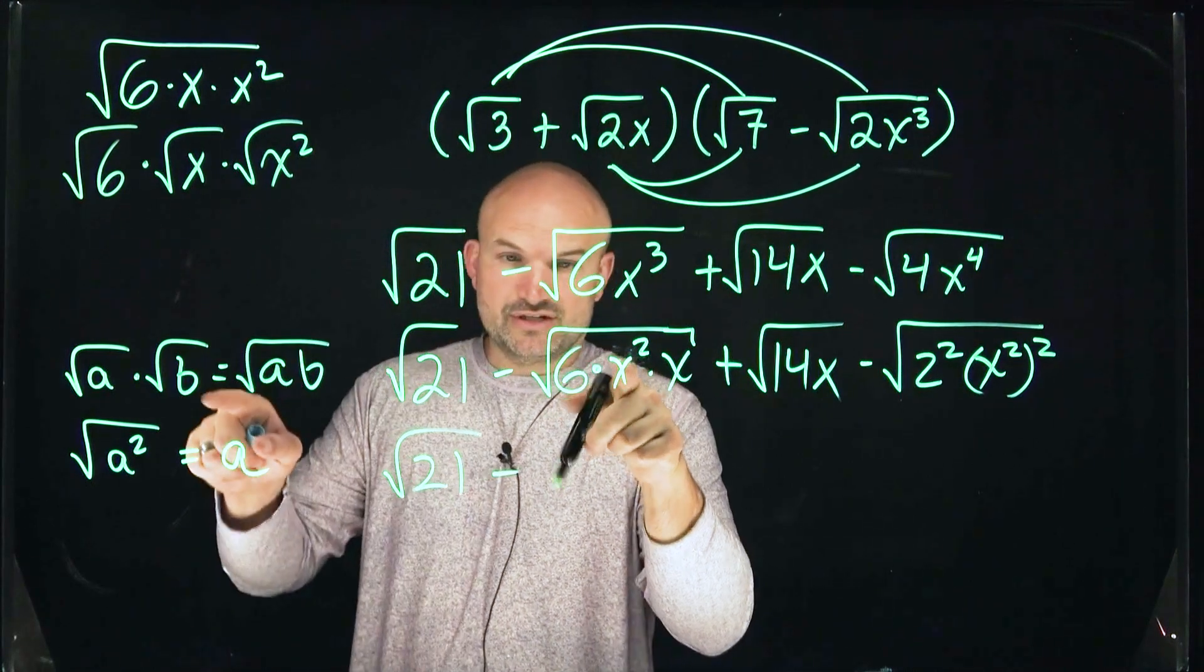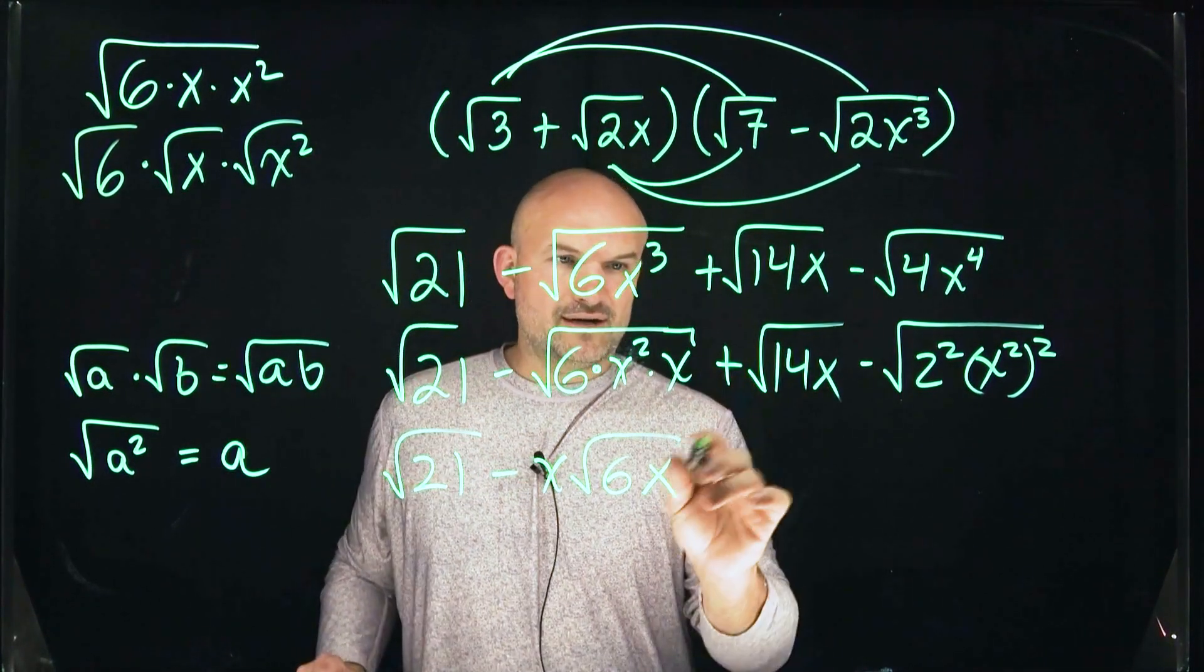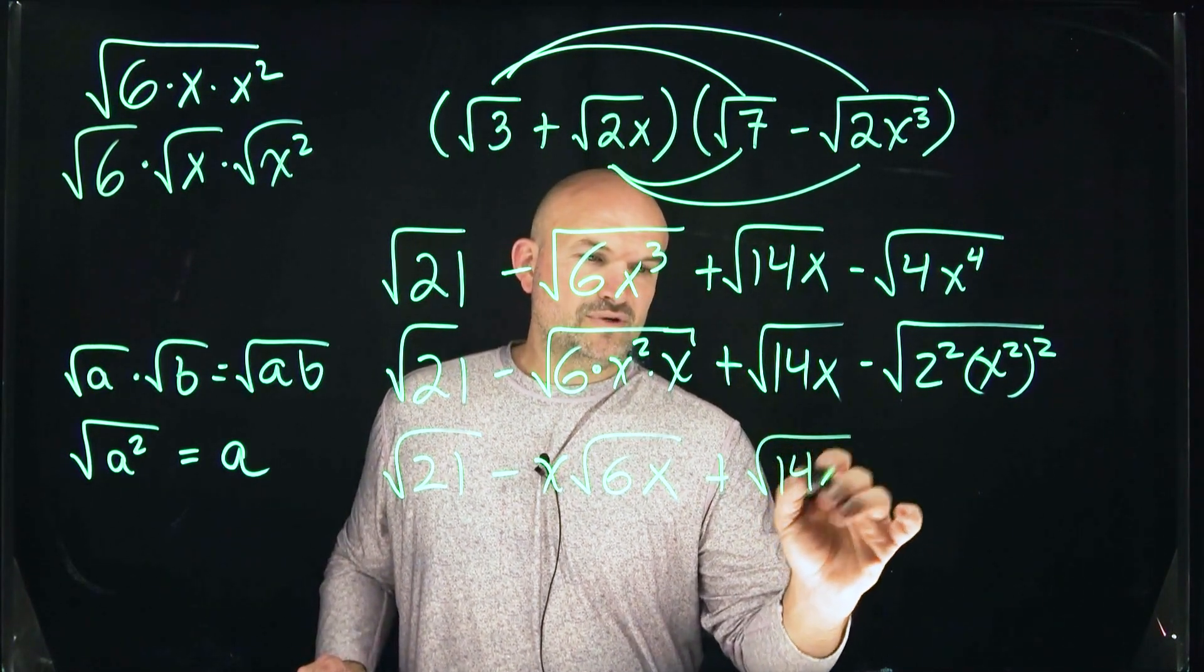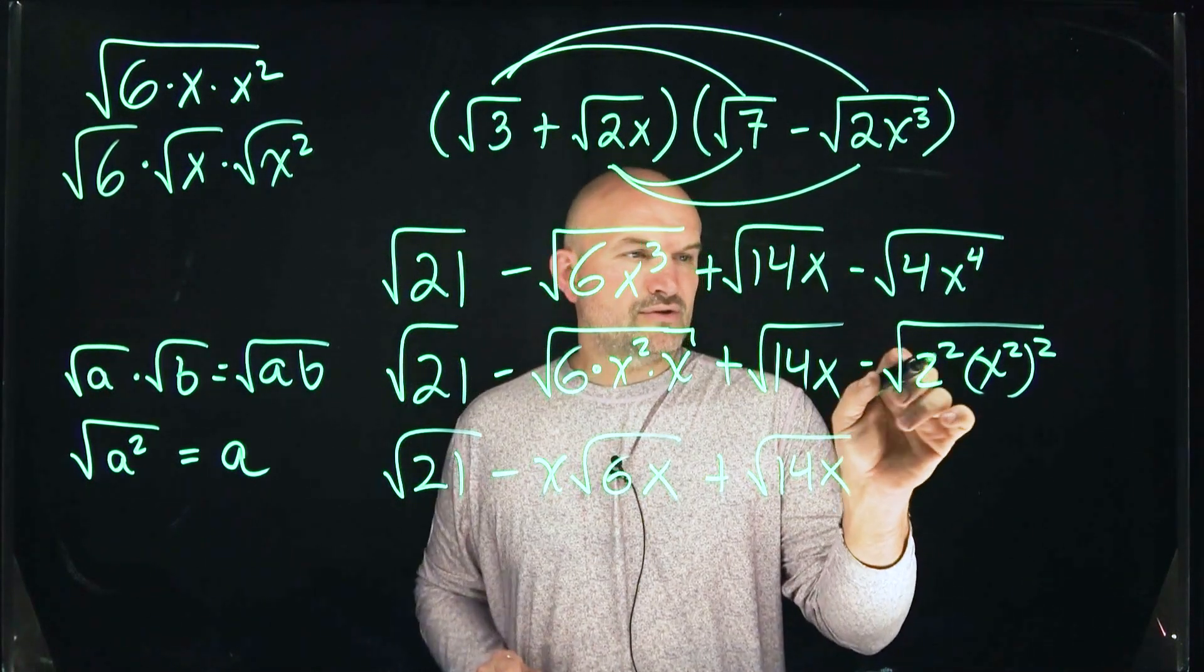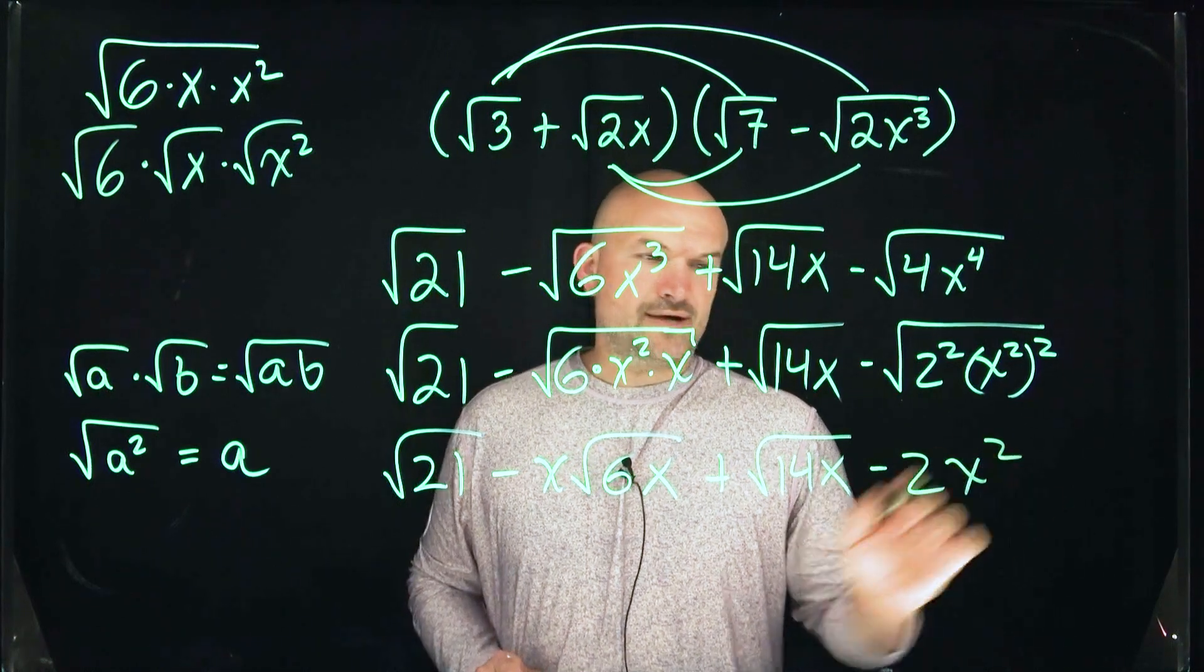So let's go ahead and see here the square root of 21 minus. Now here, the square root of x squared is just going to be x. So it's going to be x square root of 6x. Over here, I'm going to have a plus square root of a 14x. And then over here, let's see the square root of 2 squared is going to be minus a 2. And that's going to be an x squared.